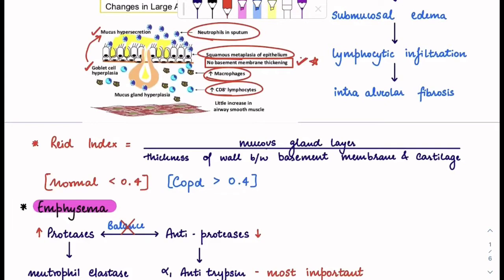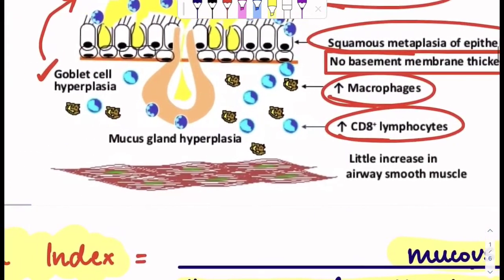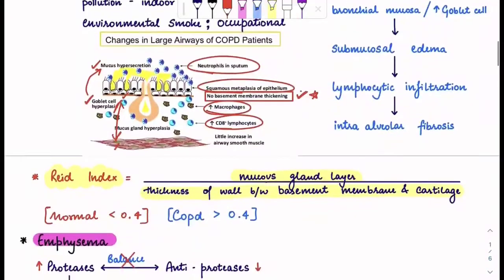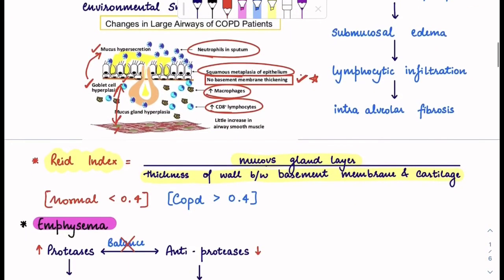The index you need to remember regarding bronchitis is the Reid index. In the Reid index, how do you calculate it? It is the mucus gland layer divided by the thickness of the wall between the basement membrane and cartilage. You will see the basement membrane and the cartilage — the thickness there will be the denominator and the numerator will be the mucus gland layer thickness. Normal Reid index is less than 0.4. When it is more than 0.4, that means the mucus gland layer is increasing, and there is going to be an increase in production of mucus.